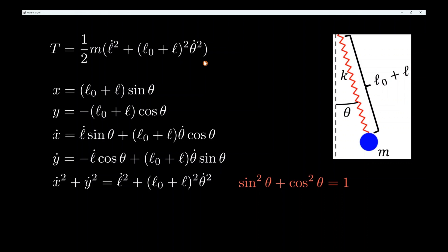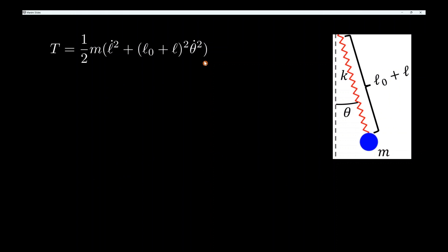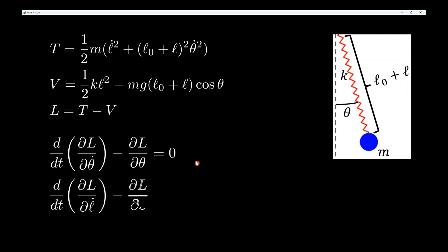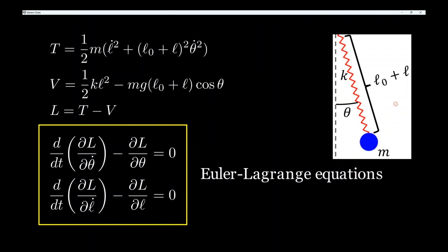Now we just need the potential energy. The potential energy is the spring potential energy plus the gravitational potential energy of the mass. The height is simply the y-coordinate, and we already have an expression for y, so we can plug that straight in. We then formulate the Lagrangian as T minus V and plug into the Euler-Lagrange equations. We have two equations because we have two generalized coordinates, l and theta, which fully represent any configuration of the system. I'll show how to solve these using Python.